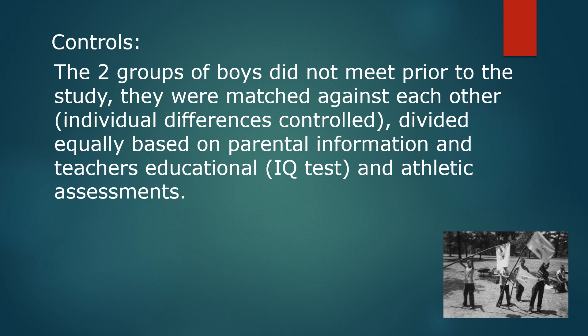As mentioned, the two groups of boys didn't meet each other prior to the study — they had never met in schools or through local communities. Each of the two groups was matched against each other, so he controlled for any individual differences that may skew the results between the two groups. They were divided equally between those two groups based on parental information about the child, teachers' educational assessments, IQ tests, and athletic assessments.